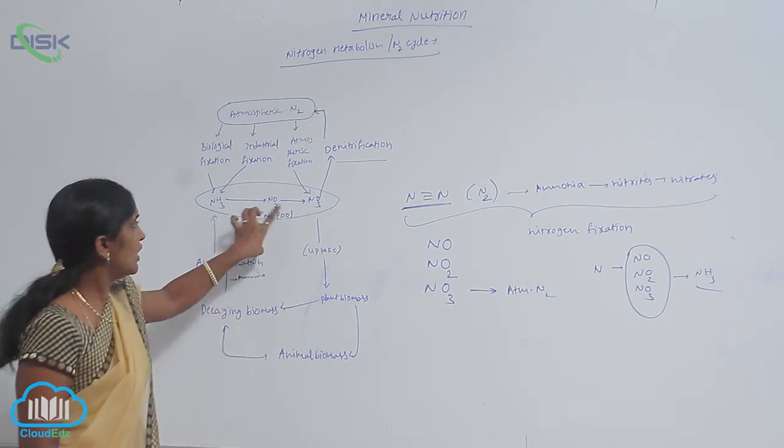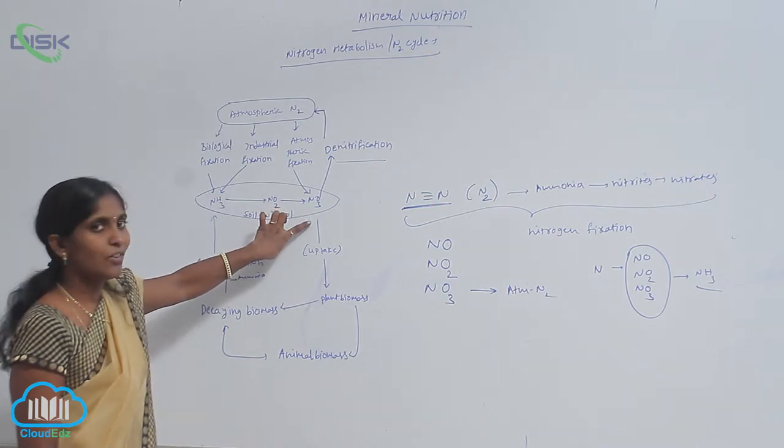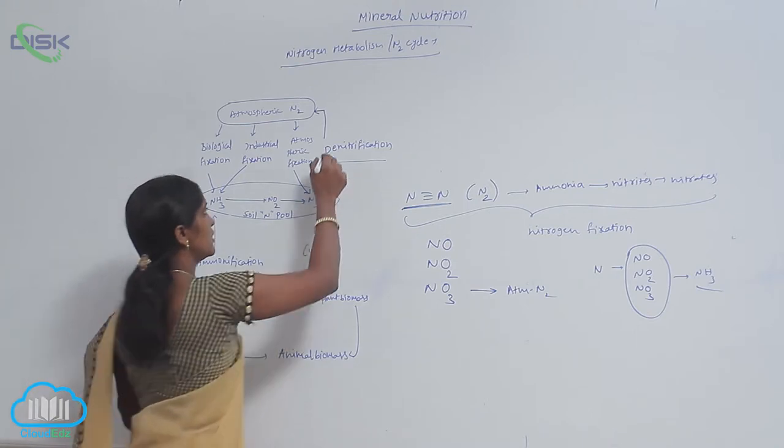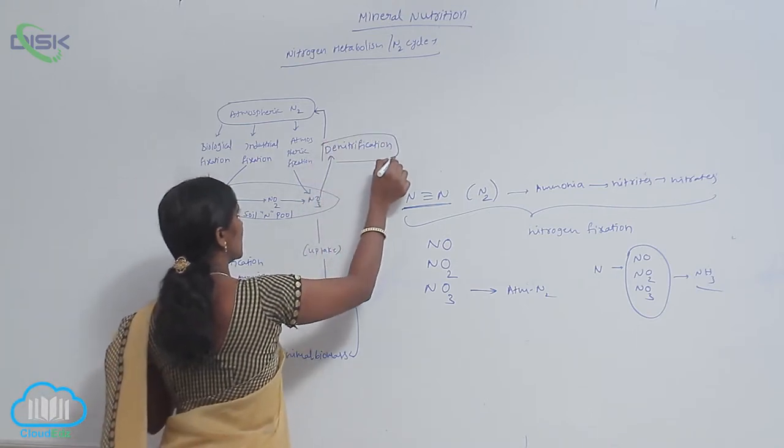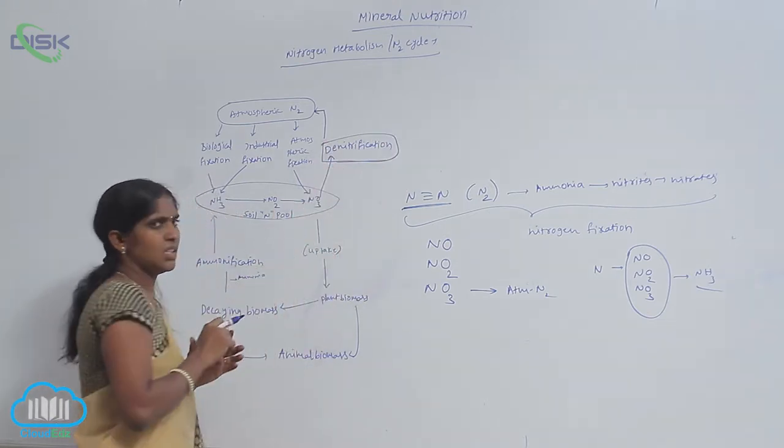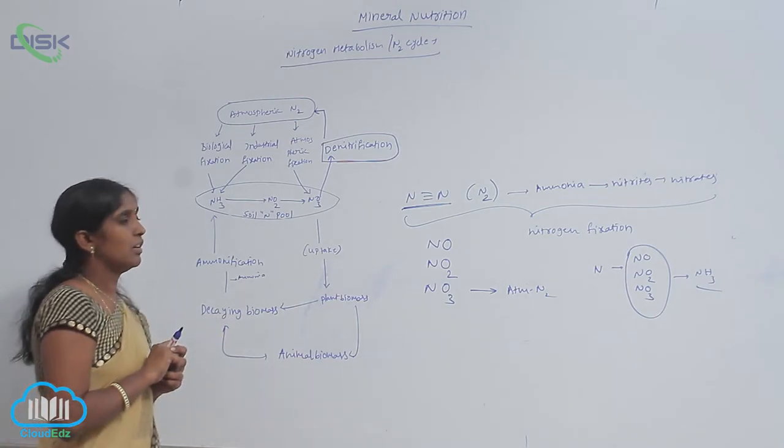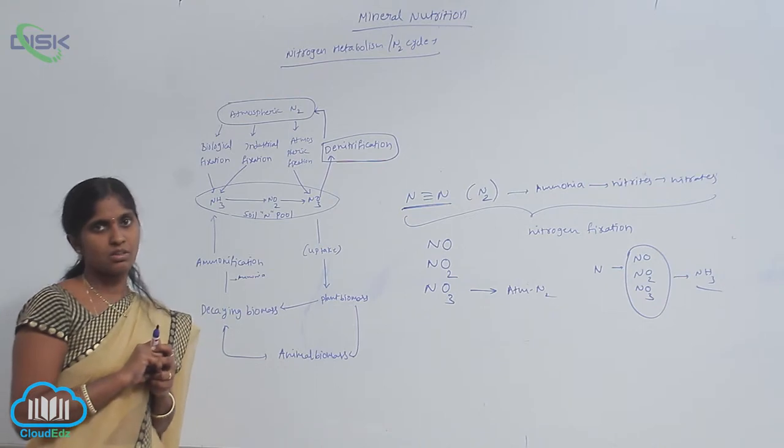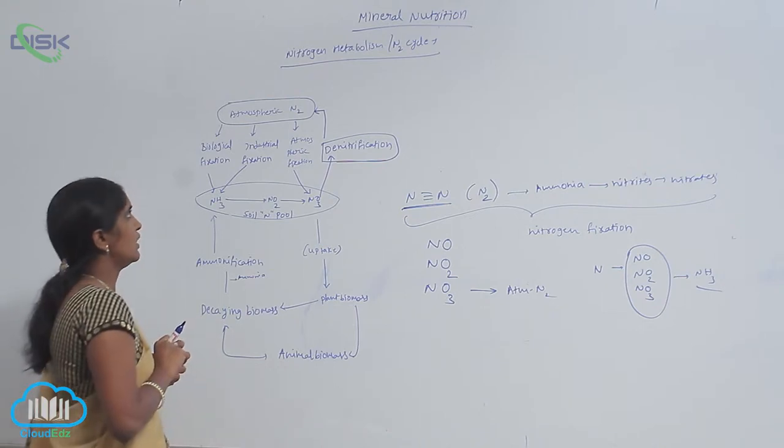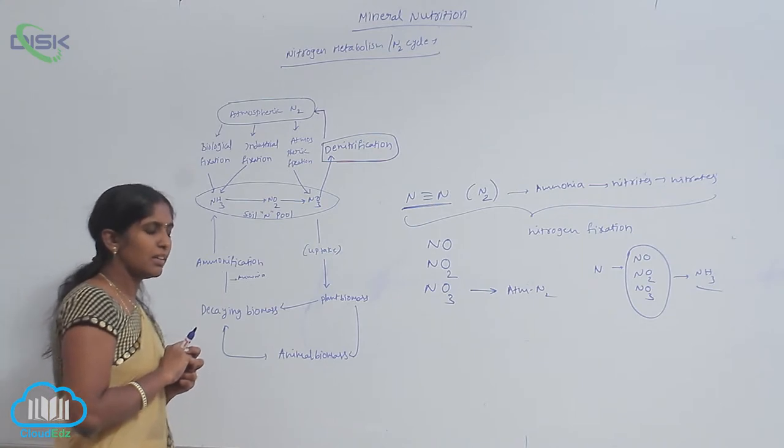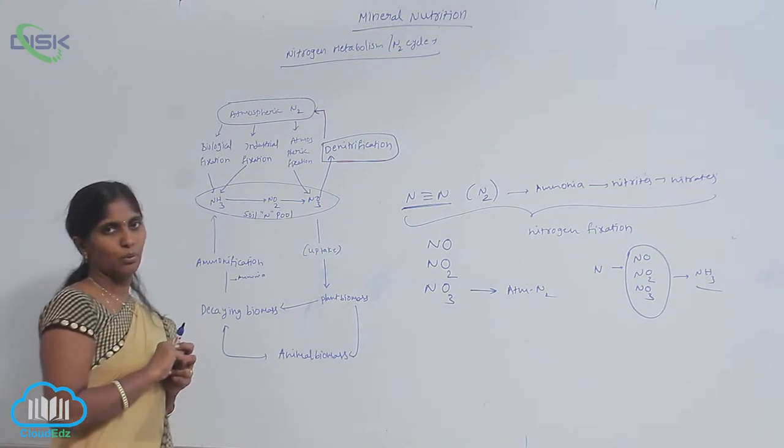Ammonia and nitrates are available forms for plants. Another phenomenon here is denitrification. What is denitrification? It's the reverse reaction of nitrogen fixation. Basically, nitrates are produced from ammonia.